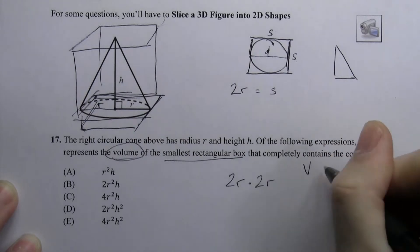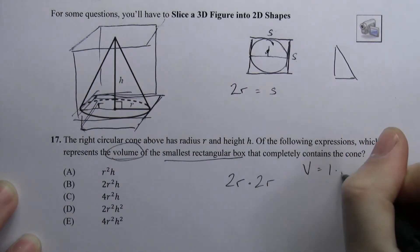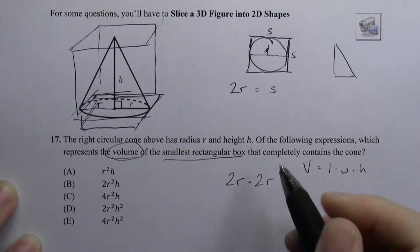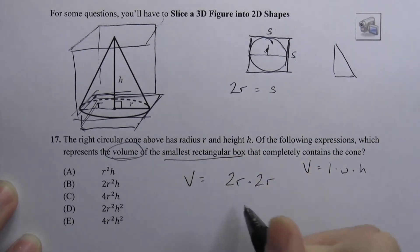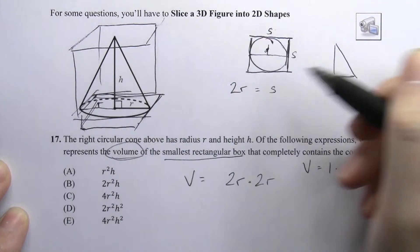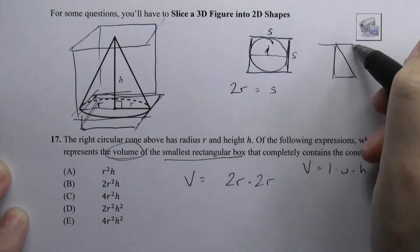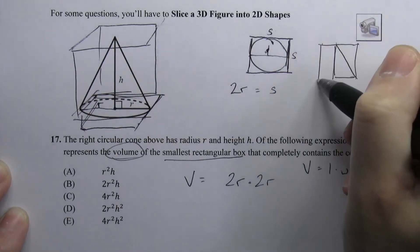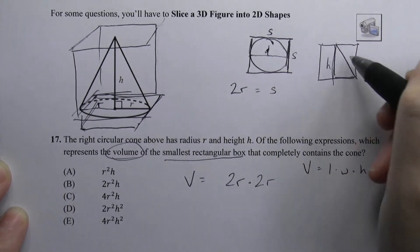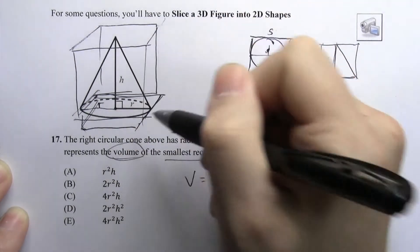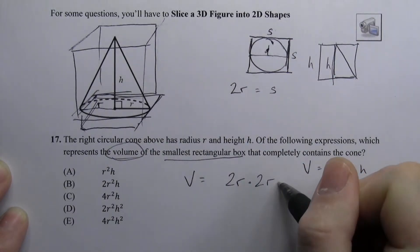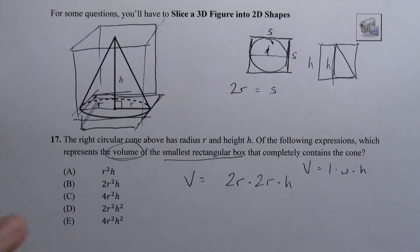The volume is length times width times height. Length and width are 2R and 2R. What's the last dimension? It's the height of the rectangle — the height of this triangle is also going to be the height of the box. So it's 2R times 2R times H. And then we can just simplify, and we're done.